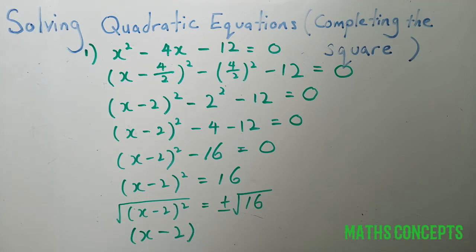It's not necessary to put a bracket, so it's all right that you can put x minus 2 equals to plus minus square root 16, which will give you plus minus 4.